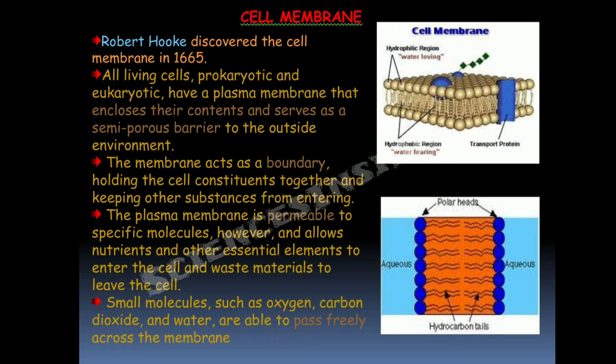The plasma membrane is permeable to specific molecules and allows nutrients and other essential elements to enter and waste material to leave the cell. Small molecules such as oxygen, carbon dioxide, and water are able to pass freely across this membrane.